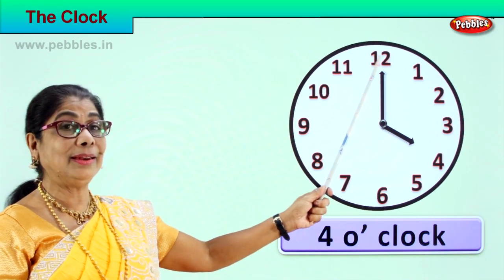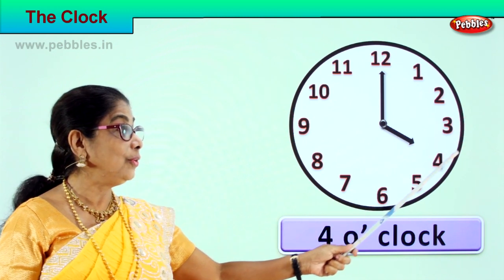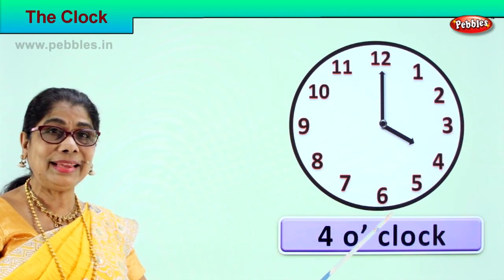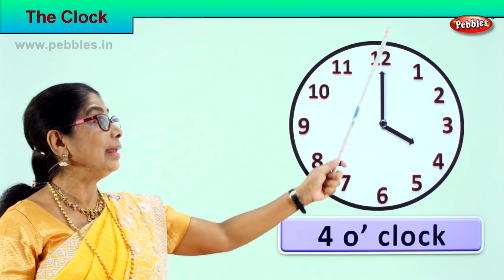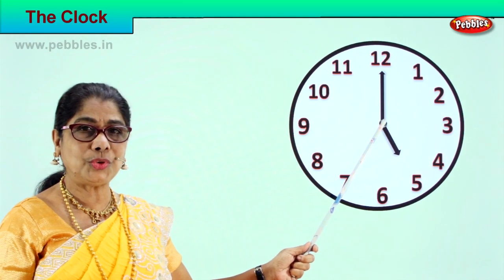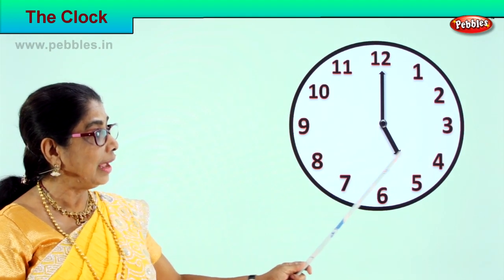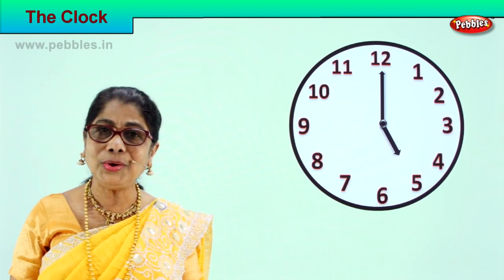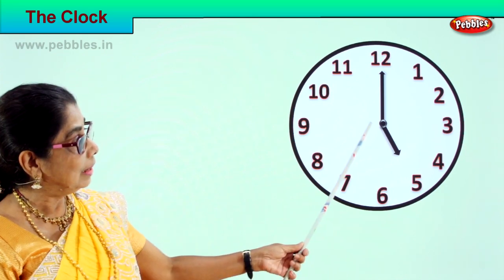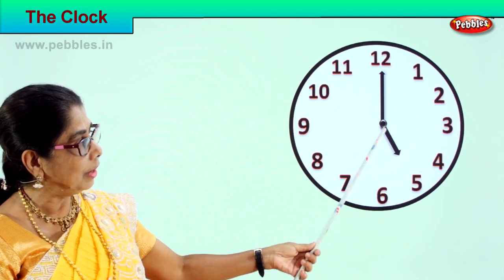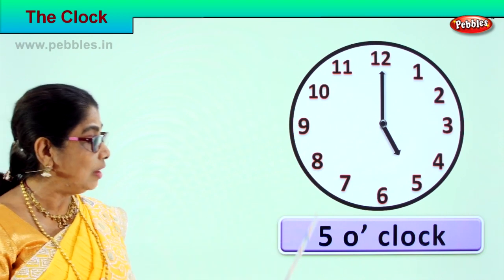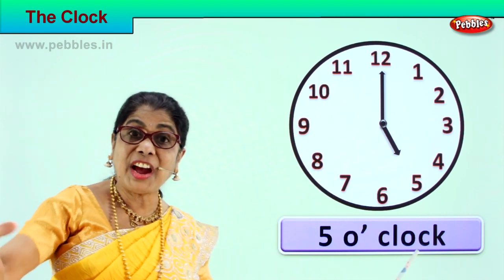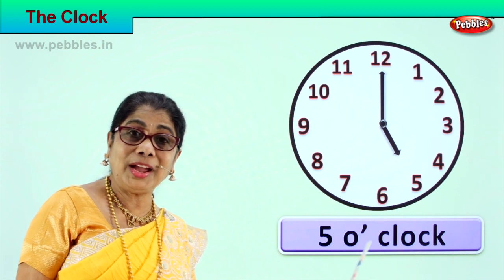Now the minute hand goes from one to two to three, all the way to twelve, and comes back and rests on twelve. The hour hand shifts from four to five. What is the time? The hour hand is on five, pointing towards five, and the minute hand stays at twelve. We read it as five o'clock.